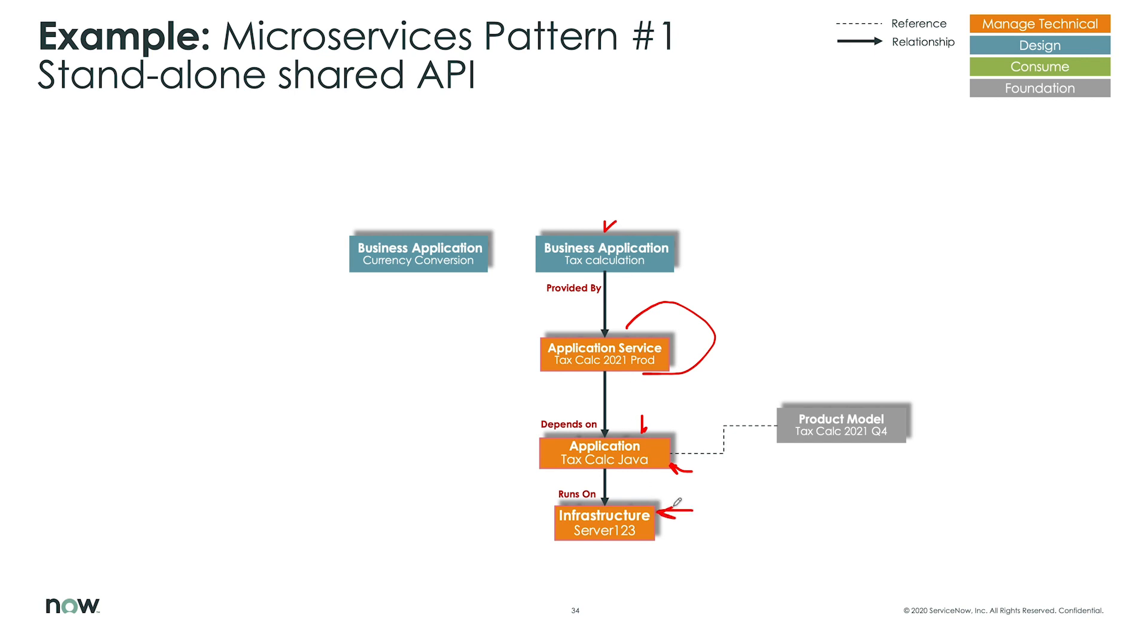And then at the very bottom is the infrastructure that the application is running on. So this is the single product model that represents all of the different instances of that product model, because you may have to deploy this particular tax calculation software in multiple places and different models at any given time.